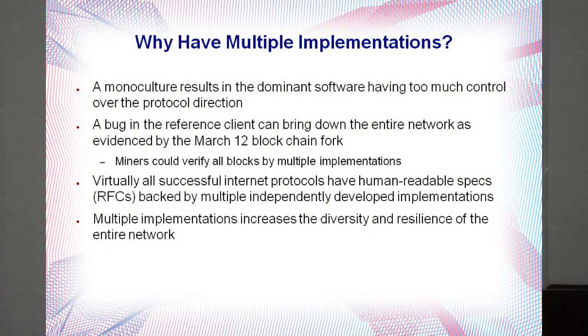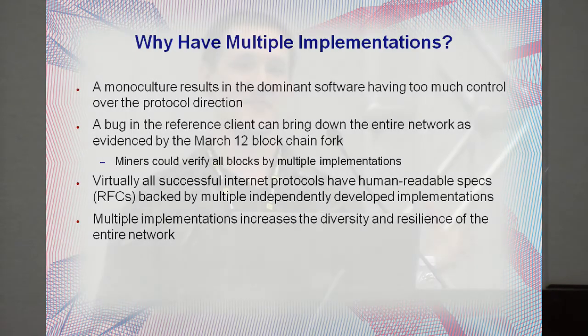Some of you may have gone to the State of the Union earlier, and I think you heard Gavin and Jeff talk about the fact that they actually do support multiple implementations. One of the main reasons for that is whenever you have a monoculture like you do with Bitcoin D — there are a couple of other implementations, but realistically it's the only game in town — it pretty much controls the entire blockchain. While the developers are doing a fantastic job, if they do have any bugs, or even changes that happen almost without knowing it, you have a situation where the core developers can make changes to the protocol with pretty far-reaching implications. If there's a bug — for example, the March 11th or 12th chain fork that everybody's familiar with — that takes the entire blockchain down as opposed to just one single implementation.